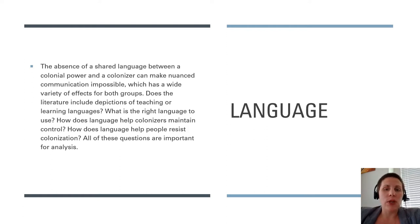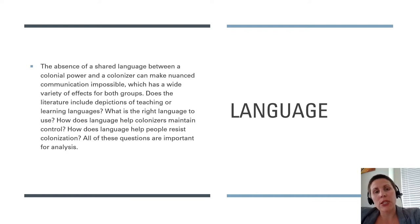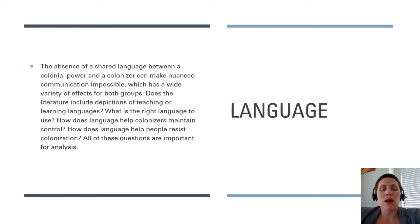Applying the theme of language means identifying what language practices are portrayed in the writing. Everything we read this term will be in English — this is practical since English is our shared language in class, but it's no accident that a lot of literature by formerly colonized people is written in English. English is a language that many colonized people inherited as a result of colonization, and the often painful history behind its widespread use can make for very complicated relationships to the language. How are colonized people taught to regard their own language? For those a generation or two removed from colonization, how do they regard native language as well as English?